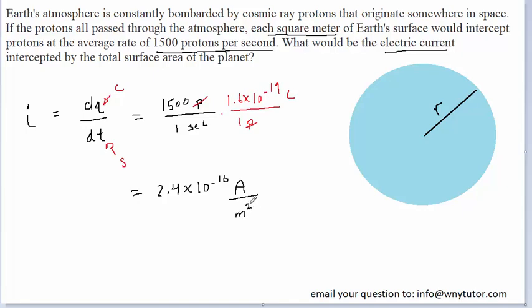In order to figure out the electric current intercepted by the total surface area of the planet, we're going to have to multiply by the surface area of planet Earth. Earth is roughly a sphere, and we know that the surface area of a sphere is 4 pi times the radius squared.